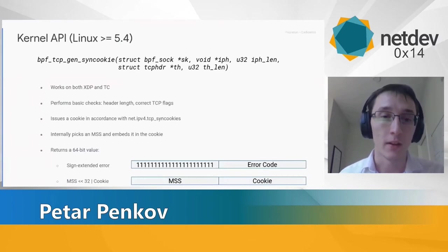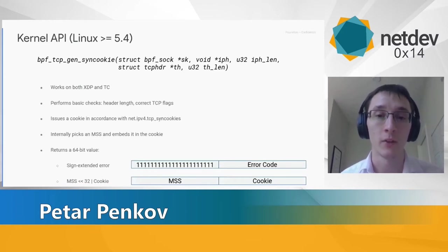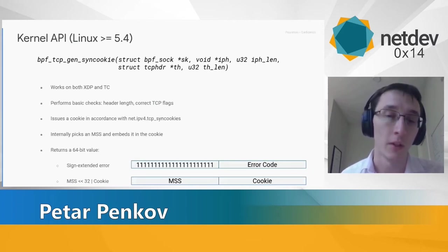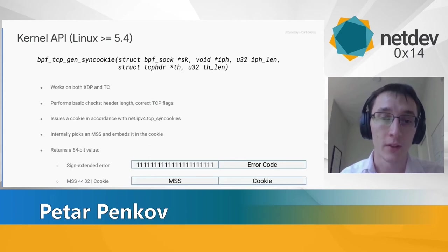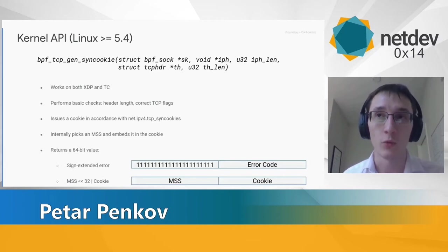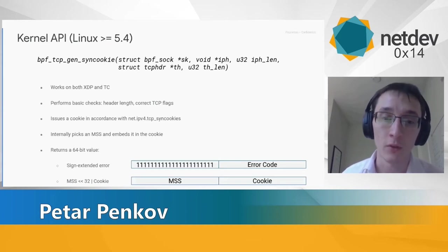The first piece is a helper function present in Linux after 5.4. The function computes a SYN cookie key based on a given socket and the IP and TCP headers. We need the TCP/IP 4-tuple and the MSS option of the TCP header. This helper is needed because computing the hash for the SYN cookie requires a kernel key we don't want to expose to BPF. The helper works with both XDP and TC.